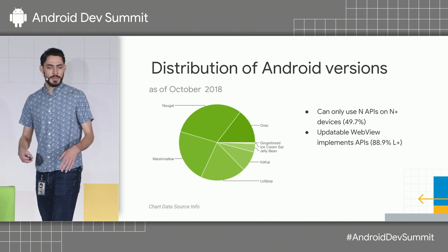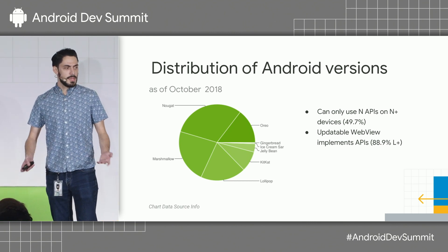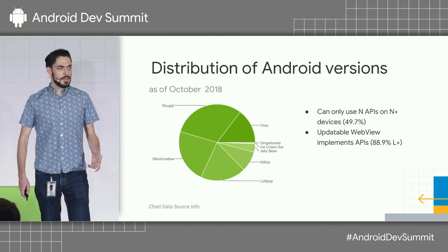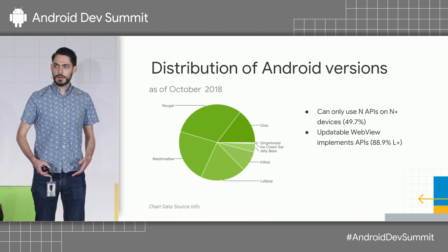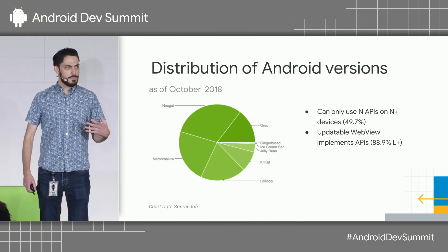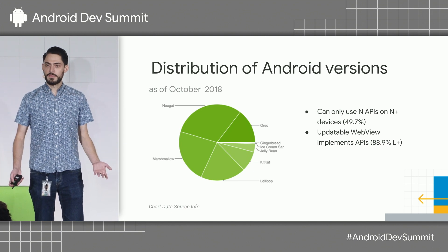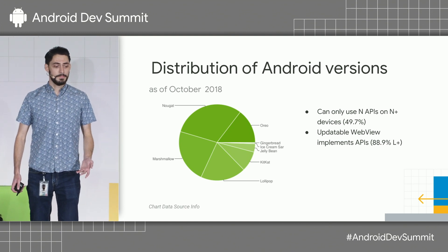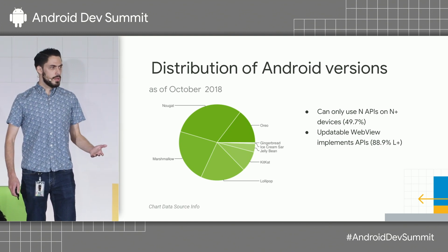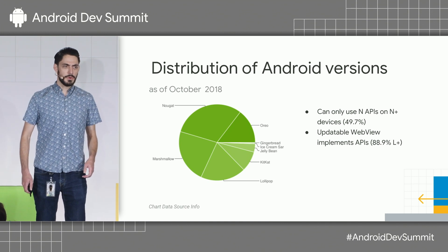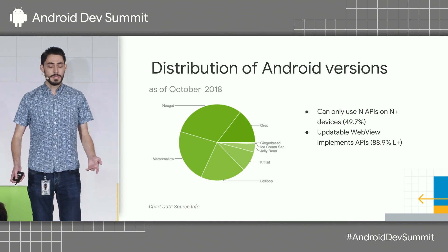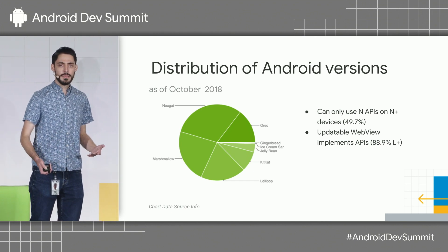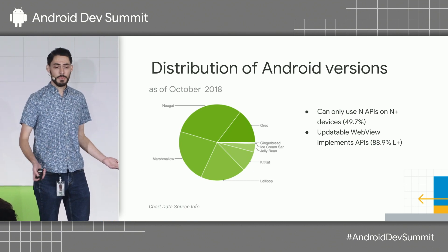We looked over the past year at the Android ecosystem and the devices out there today. Although we added great APIs on Nougat, a lot of apps can't take advantage of them because they only run on Nougat devices — less than 50% of devices today, and it's been over two years since it came out. But almost 90% of devices are running Lollipop, which means they're taking WebView updates and the WebView implementation actually implements all these new APIs — they just aren't exposed on older platform levels.